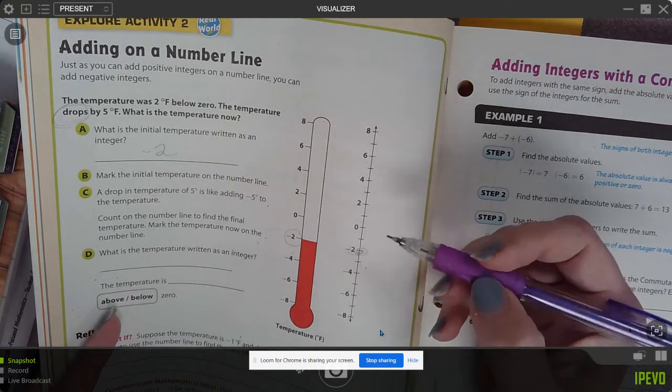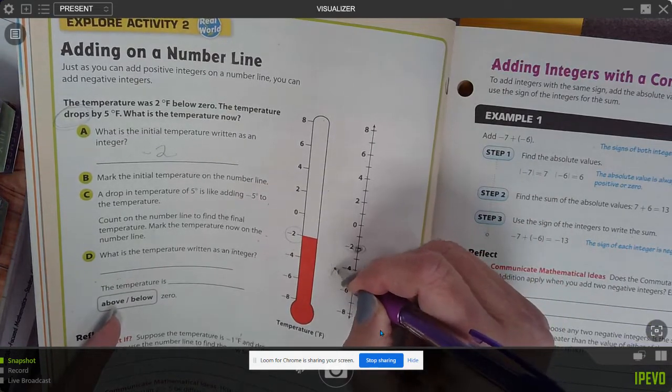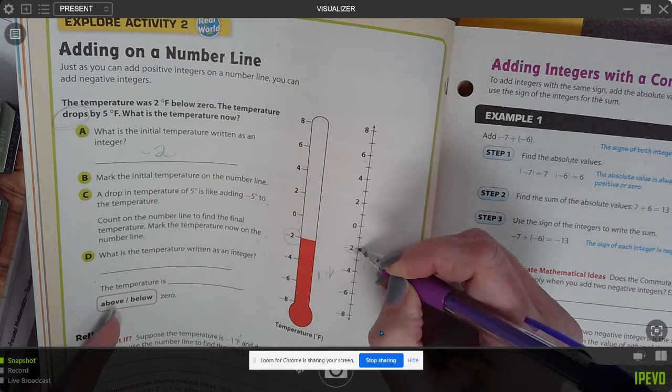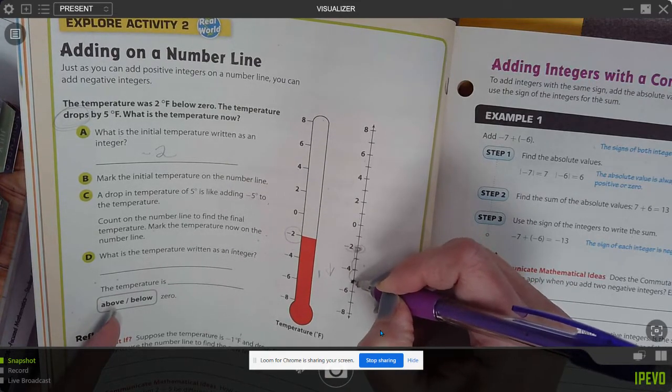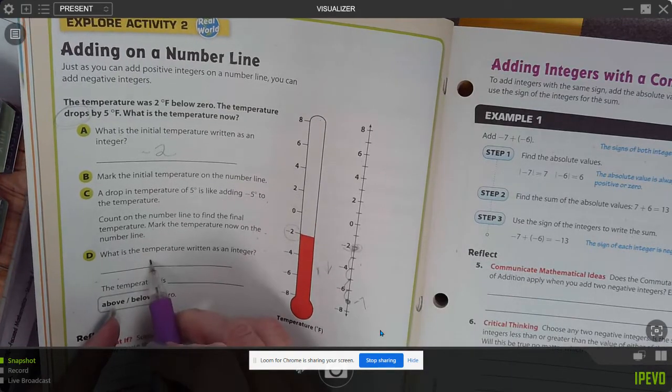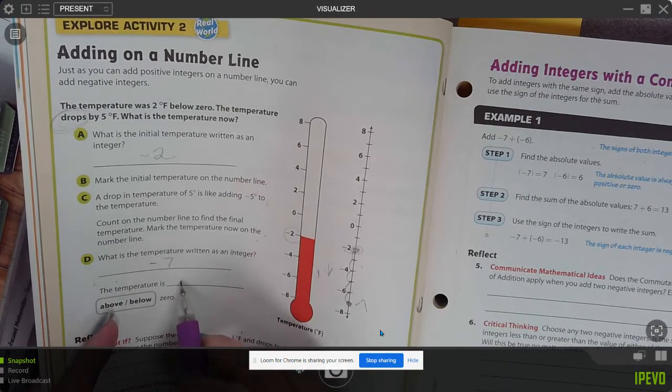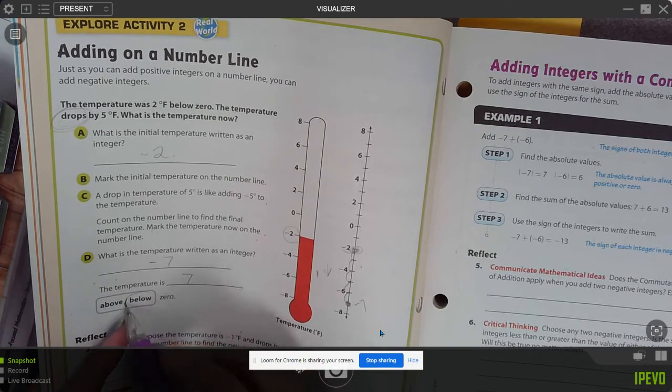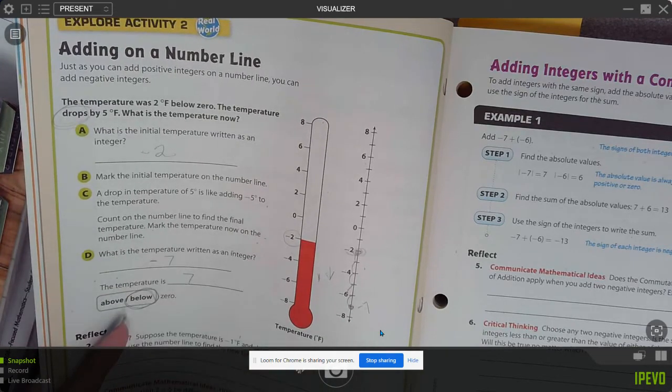So it's going because it's negative, it's going backwards. So one, two, three, four, five. That will make our answer be negative seven. The temperature is seven below zero.